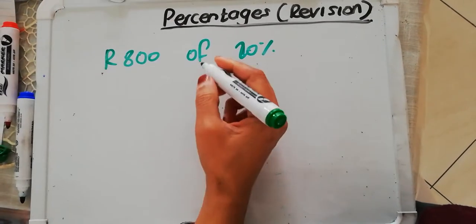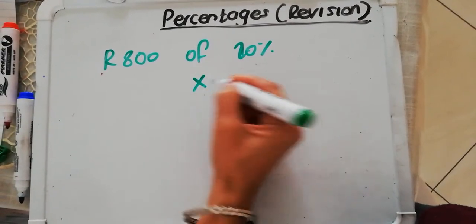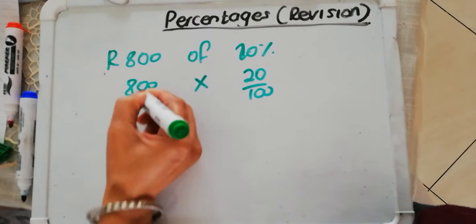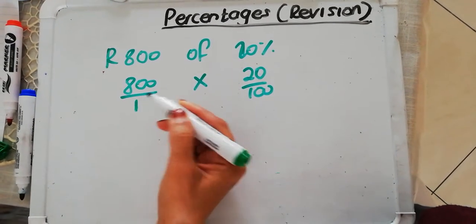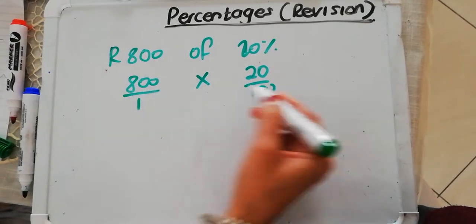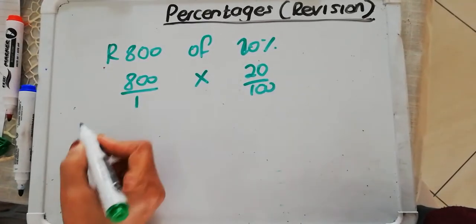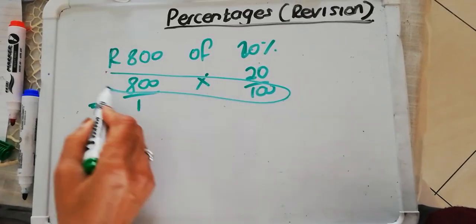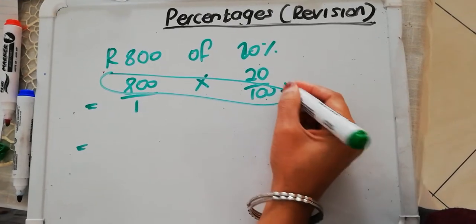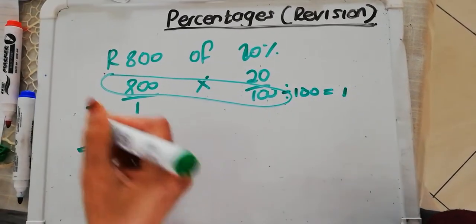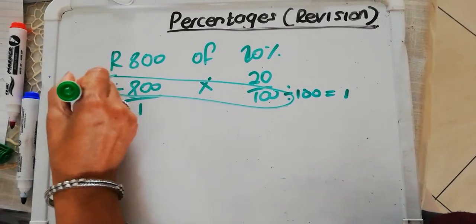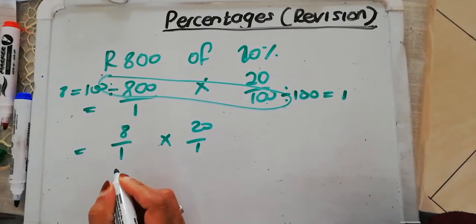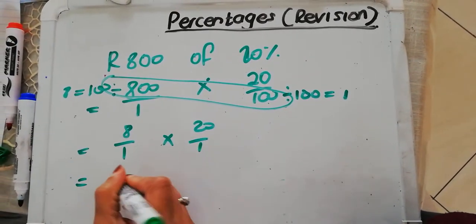If you remember, we have done this before. Off means multiplication. Anything with a percentage sign always goes over 100 and my whole number over 1. Why over 1? When I put it over 1, I'm not changing the value at all. I'm just converting it to a fraction so that it can match up with my percentage. Then, again, I cross-simplify. If I look at 100 and 800, 100 divided by 100 is equal to 1. 800 divided by 100 equals 8. That leaves me with 8 over 1 times 20 over 1. That gives me, what is 8 times 20? 160.